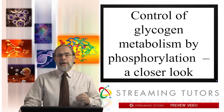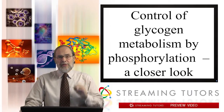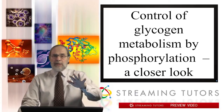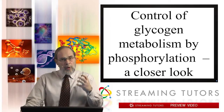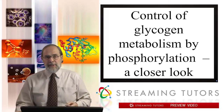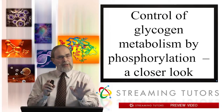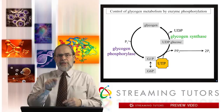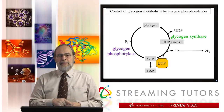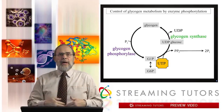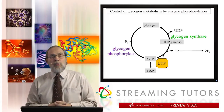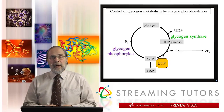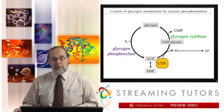Let's look at control of glycogen metabolism by phosphorylation. We just introduced this topic at the end of the last segment as we were beginning to zoom back. Here are the two sets of reactions that control the flux — the cycling between glycogen and glucose in the G6P form that's available for glycolysis or the pentose phosphate pathway, for example.